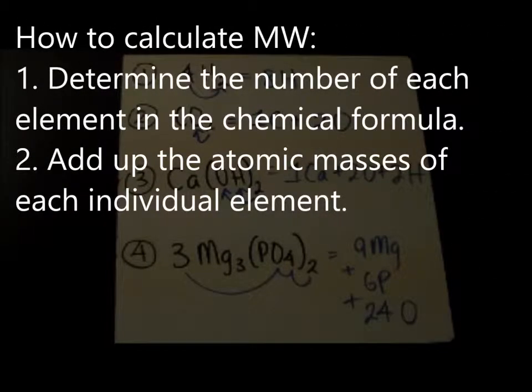After you determine how many of each element is present within a compound, you simply just add up the atomic masses of each individual element to get the molecular weight of the entire compound.